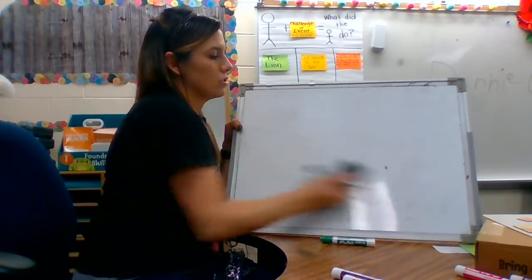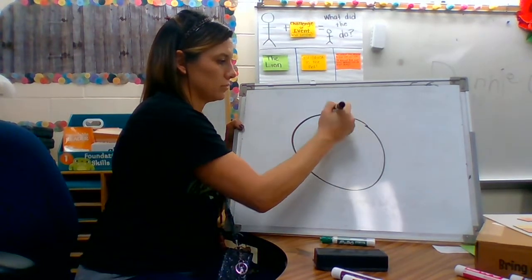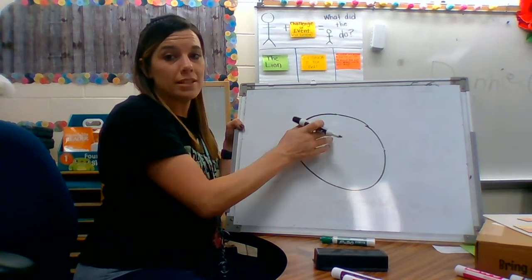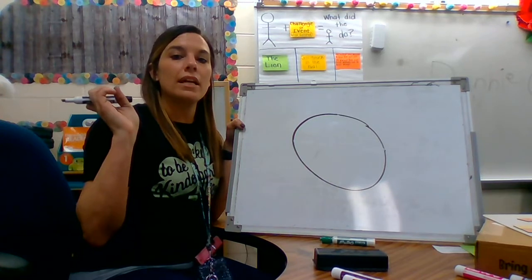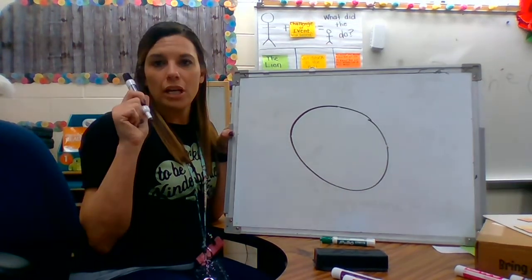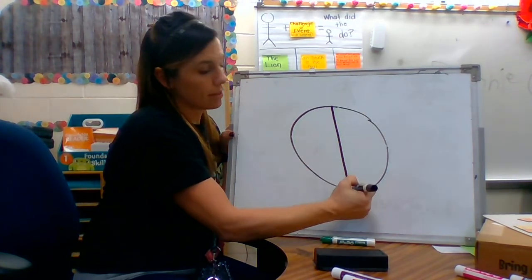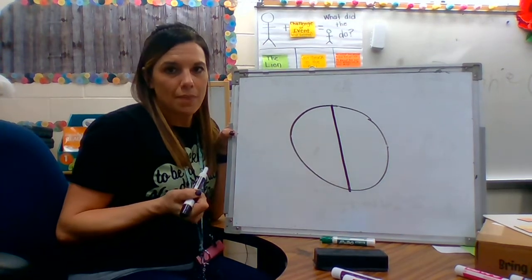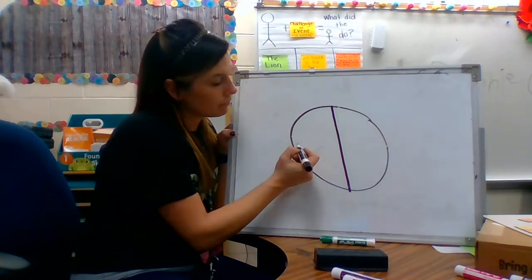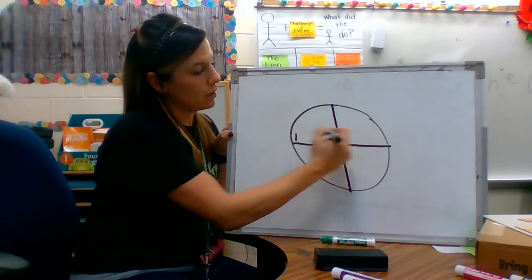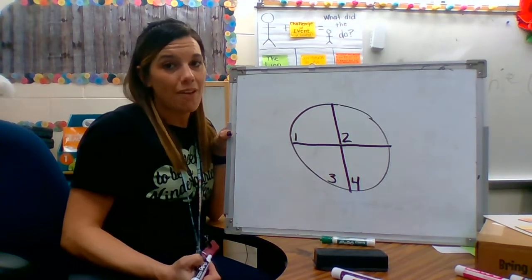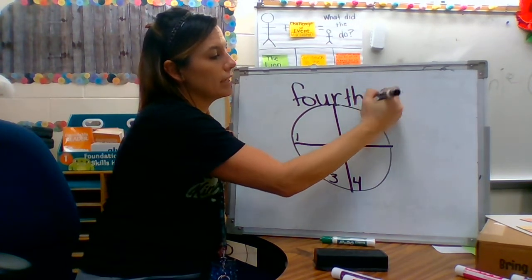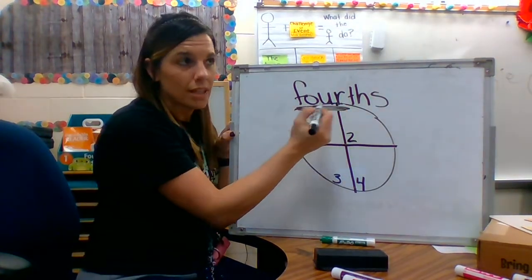Let's try it with a circle. So I have a whole circle — it's not divided up yet. I want to share this circle with three of my friends, so I have to divide it into four equal parts. I already know if I draw one line down the middle, it gives me two equal parts. Do you think drawing another line down the middle of the circle is going to give me four equal parts? Let's try it. Let's count: one, two, three, four — I have four equal parts. So now my whole circle is divided into fourths. Fourths is four equal parts.